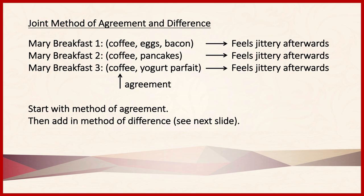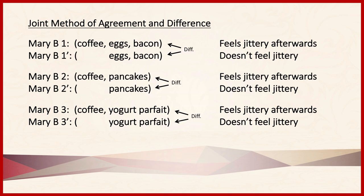However, this isn't particularly strong evidence on its own. We can make it stronger by adding the method of difference. We take her first breakfast — coffee, eggs, and bacon — and have her eat another breakfast of just eggs and bacon, removing the coffee. She doesn't feel jittery. We do the same with breakfast two: she had coffee and pancakes, now just pancakes — no jitters. And with breakfast three: coffee and yogurt parfait, then just yogurt parfait — no jitters. Combining agreement and difference provides much stronger evidence for a causal relationship.